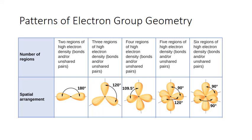There are five major patterns for electron groups. First, you can have two electron groups on a central atom. Imagine this dot in the center is your central atom, and the electron groups are like balloons that are tied to it. In order for those groups to be as far apart as possible while still attached to that central atom, they will arrange themselves to be 180 degrees apart.